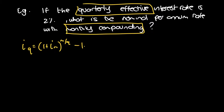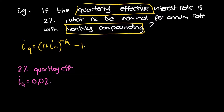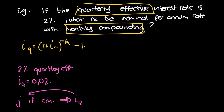What do we have? We have 2% quarterly effective — this is already an effective interest rate. So I4 equals 0.02, because we write 2% divided by 100 in decimal fraction notation. It gave it to us as an effective interest rate. Now it asks for the nominal interest rate, so it's asking for J if compounding is monthly — which means we first need to find I12.